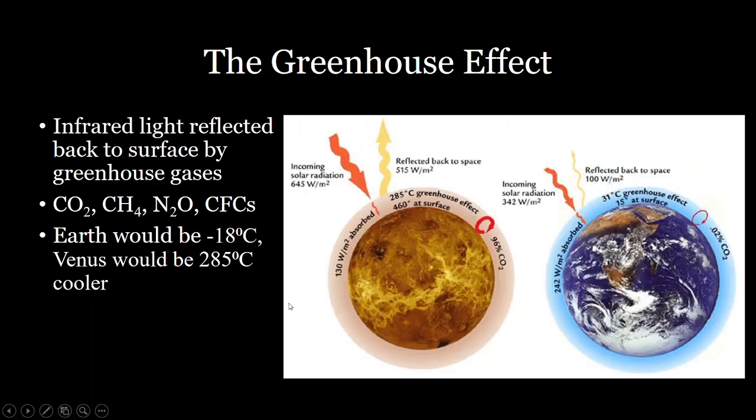And so greenhouse effect has a really big impact on the temperature of the earth. So if the earth didn't have any atmosphere and was just reflecting everything back out into space, then the average temperature would be 18 degrees below freezing. So extremely cold and there probably couldn't be as much life as there is now on earth. And so really we couldn't have life on earth without the greenhouse effect.